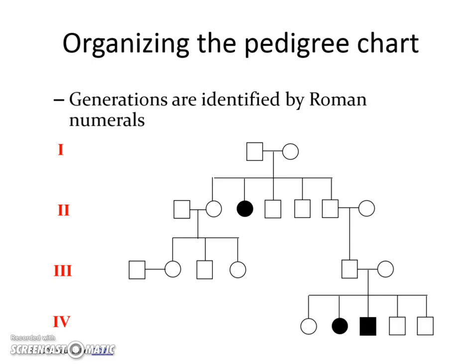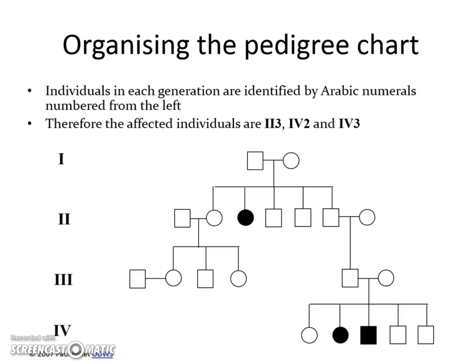When you organize this pedigree or family tree, you use Roman numerals on the left to represent generations — like grandparents, parents, and then your generation: one, two, three — and future children could be four. We refer to an individual based on their generation and their position going from left to right. For example, the first affected individual is in the second generation and they're the third one over, so we call it Roman numeral II-3. The next two are in generation four but are individuals two and three.